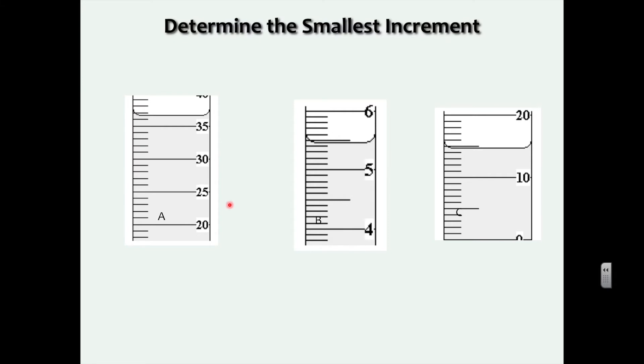So first goal is to be able to determine the smallest increment. Now, the smallest increment here is, for this first one, when I say the smallest increment, I'm saying how much is each line worth. So there's a little formula to that. The smallest increment is the difference between the numbers divided by the number of lines. So the difference between here and here is going to be 5, right? Between 30 and 35.